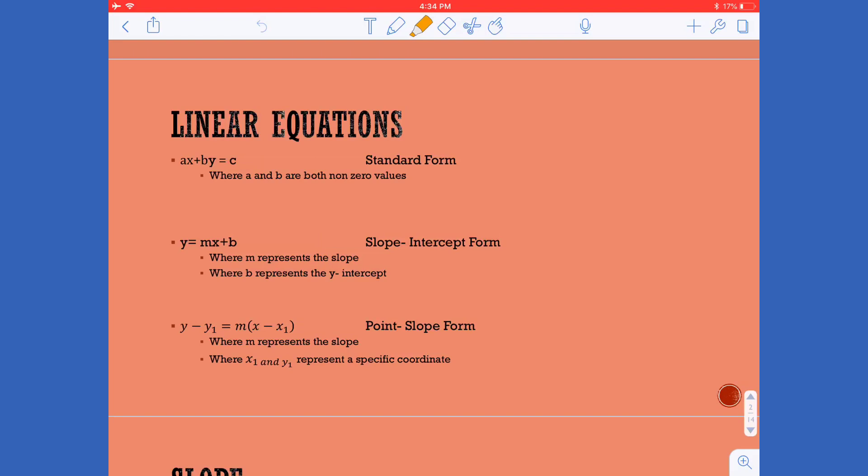In point slope form you'll notice that I have the m which is still the slope and I bring in x sub 1 and y sub 1, and these actually represent specific coordinates, so when we know at least one point on our line these can be very useful to us.